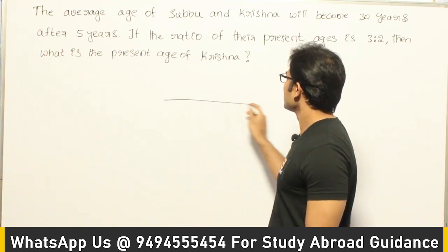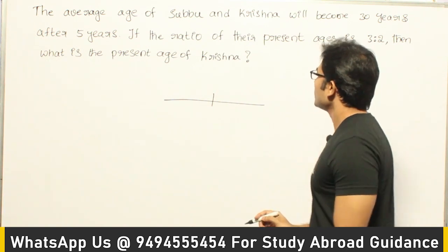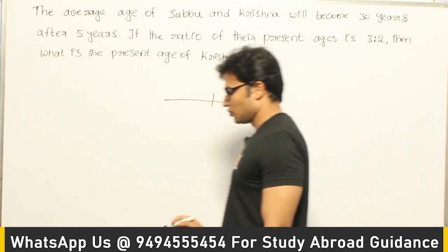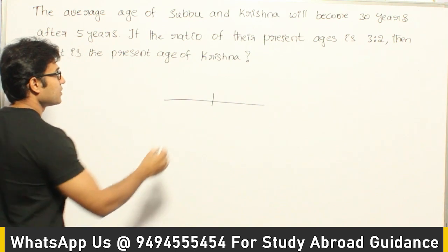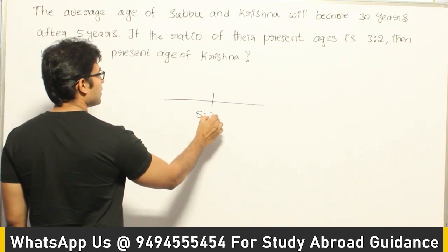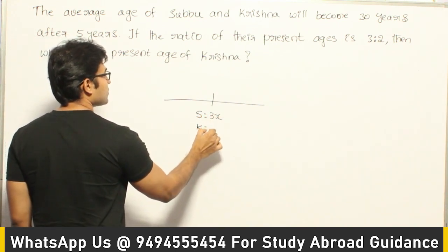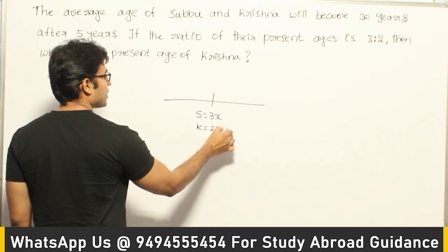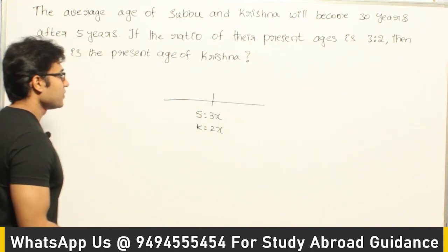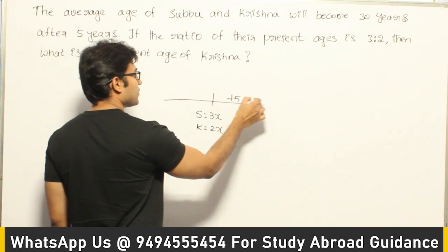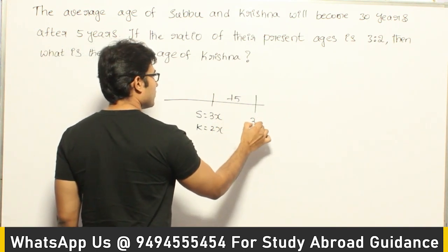At present, the ratio of the ages of Subbu and Krishna is 3 is to 2. So let us assume that Subbu's age is 3x and Krishna's age is 2x at present. After 5 years, their ages will be 3x plus 5 and 2x plus 5.